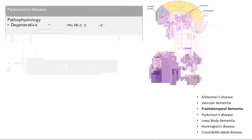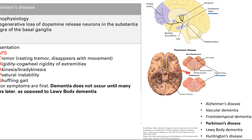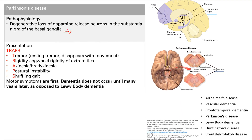Parkinson's disease is another big one — it's the degenerative loss of dopamine-releasing neurons in the substantia nigra of the basal ganglia. Dopamine promotes the direct pathway and blocks the indirect pathway, so losing dopamine leads to decreased movement. There's a nice mnemonic for the presentation: TRAPS. T stands for tremor — this is a resting tremor, the pill-rolling tremor where the hands move back and forth like rolling a pill in the fingers, and it disappears with movement.